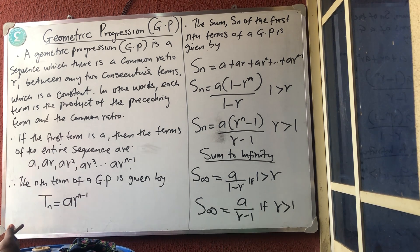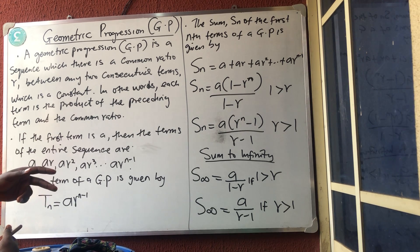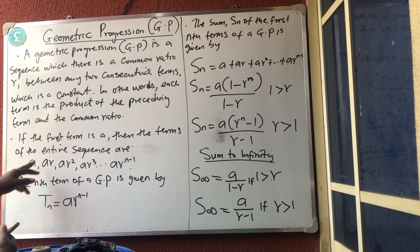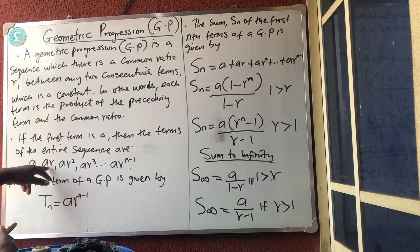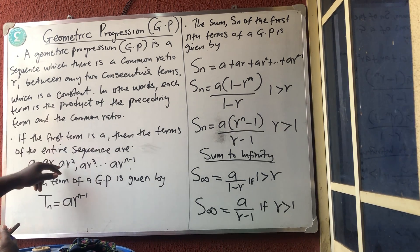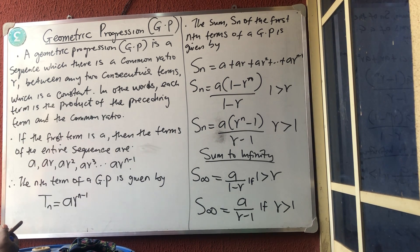To get the second term, you take the first term times the common ratio. So if the common ratio is R and the first term is A, the next term is A times R. Then the term after that is the previous term times R — every term you want to get, you multiply by R.